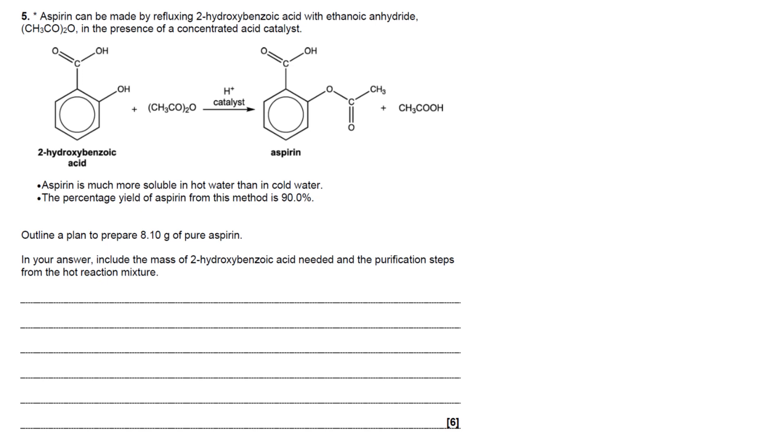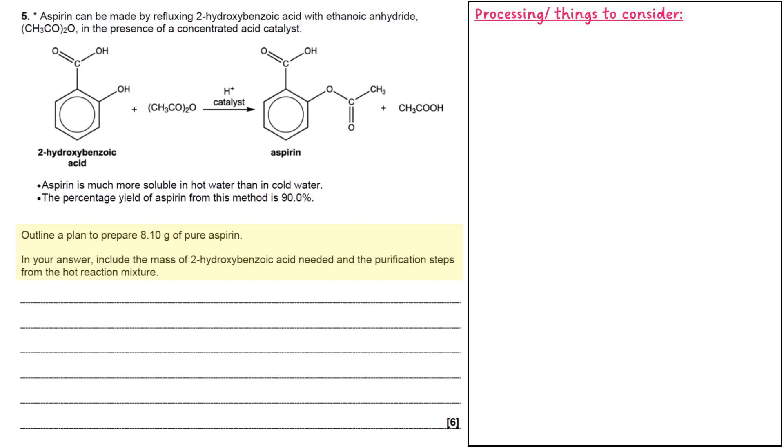The first thing to look at is what do they want you to do. They want you to outline a plan to prepare 8.1 grams of pure aspirin. They tell you about the equation for the reaction. They also say that aspirin is much more soluble in hot water than cold and the percentage yield from this method is 90%. If I draw your attention to this sentence here, this is the instruction that we need.